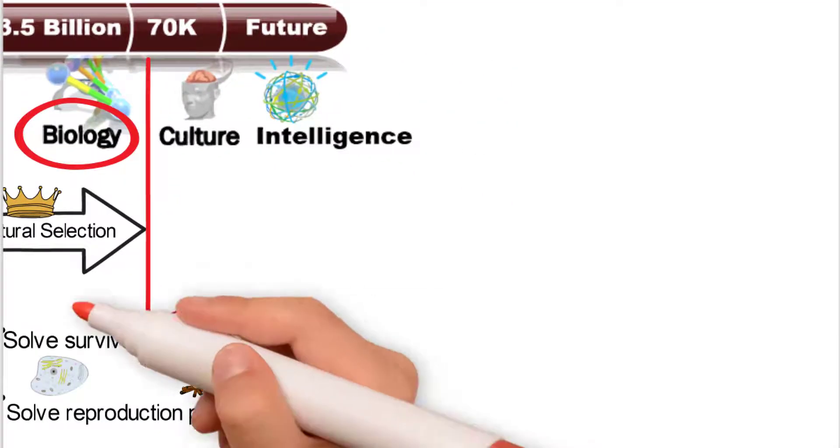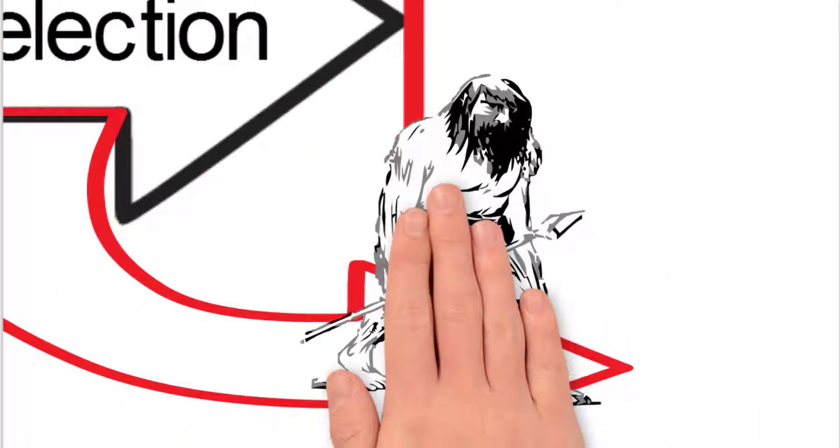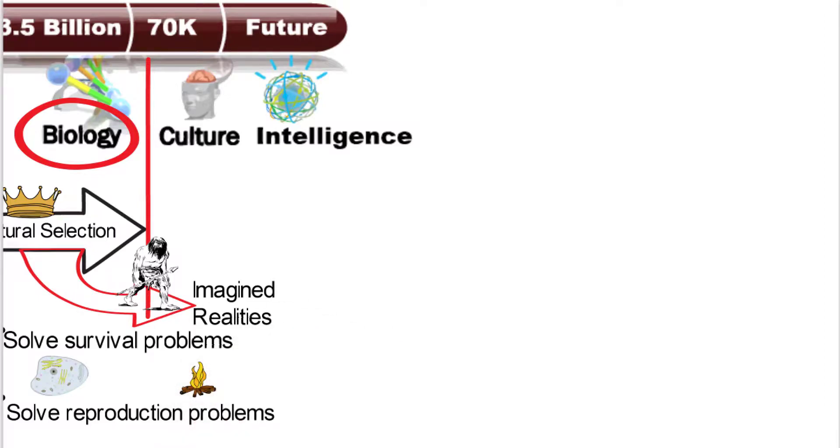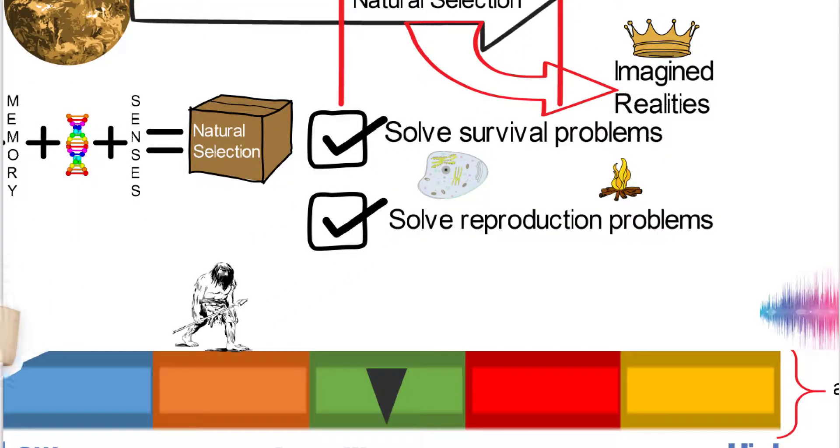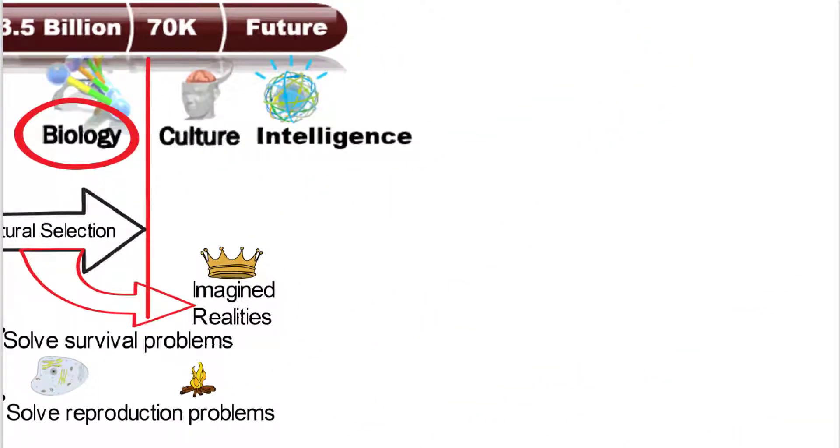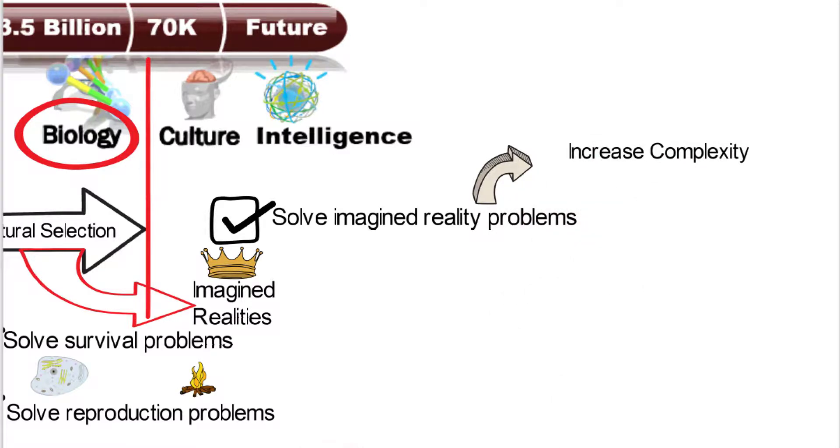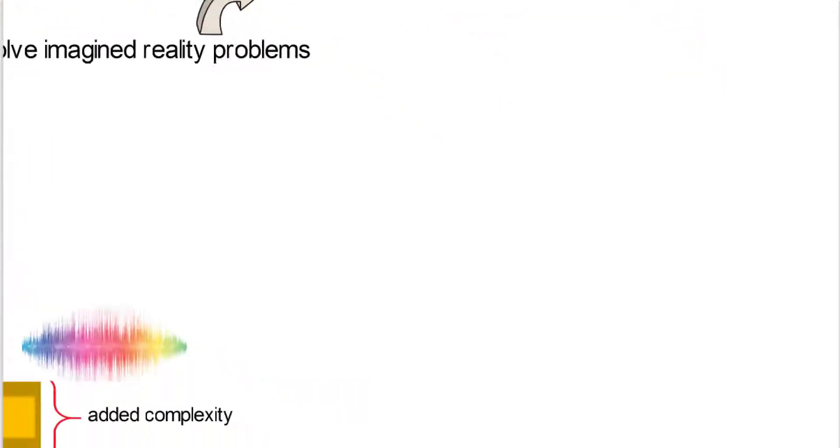And so that's with biology. Then all of a sudden, about 70,000 years ago, we had this sapiens creature. And what sapiens brought to the table is they brought this idea of imagined realities. And all of a sudden, natural selection was no longer the king. Instead, these imagined realities were. One of the other things that happened is that sapiens also actually increased the level of intelligence so that sapiens are actually able to solve problems that a monkey wouldn't even think of as problems. But then, as time went by, the imagined reality problems also started to become more complex. So the institutions that sapiens built in order to deal with these imagined realities increased in complexity.